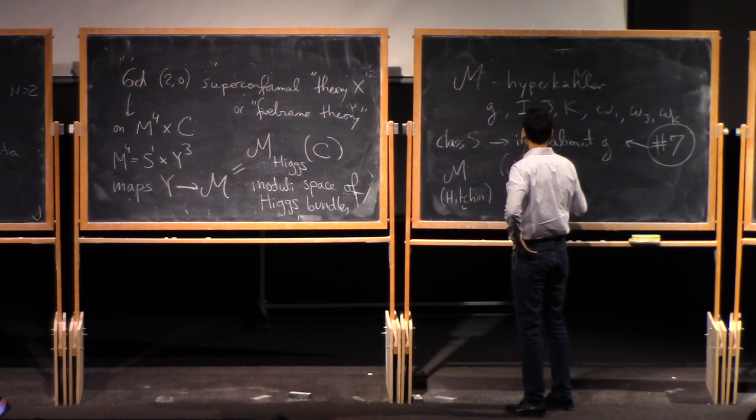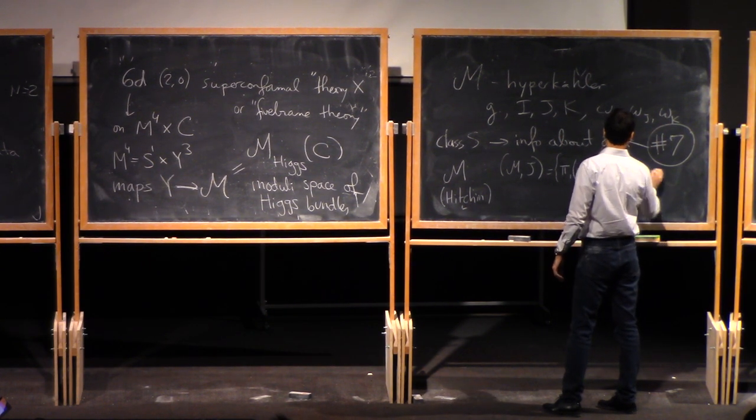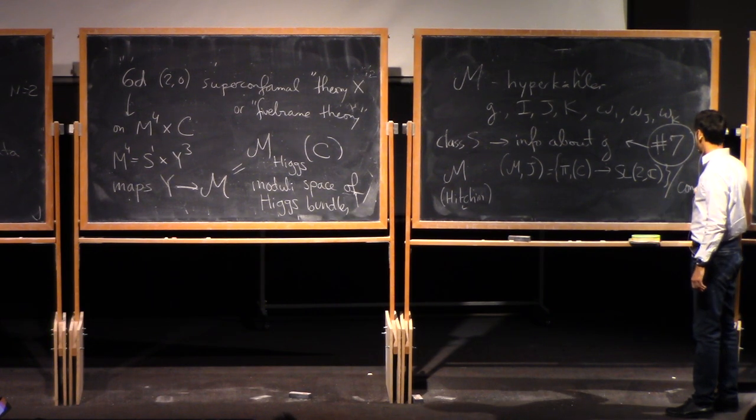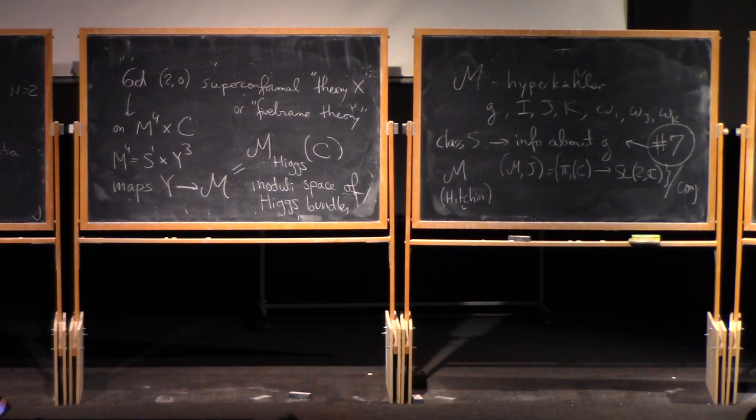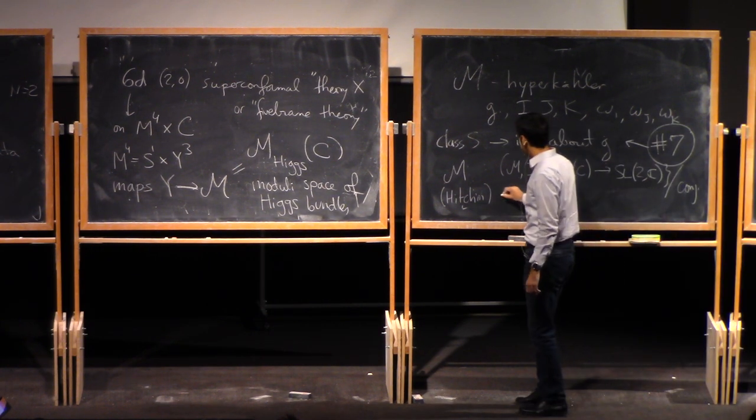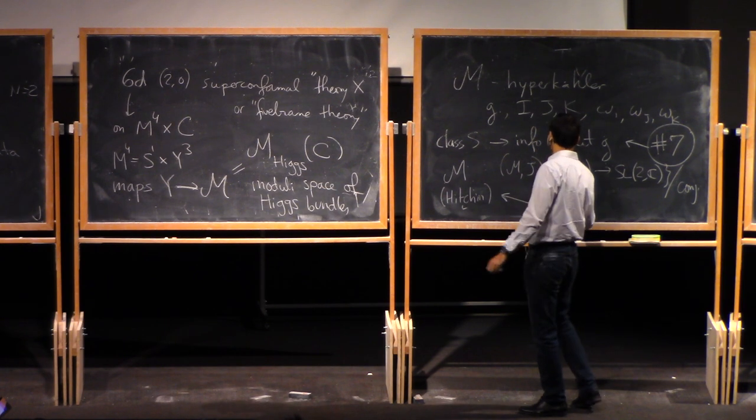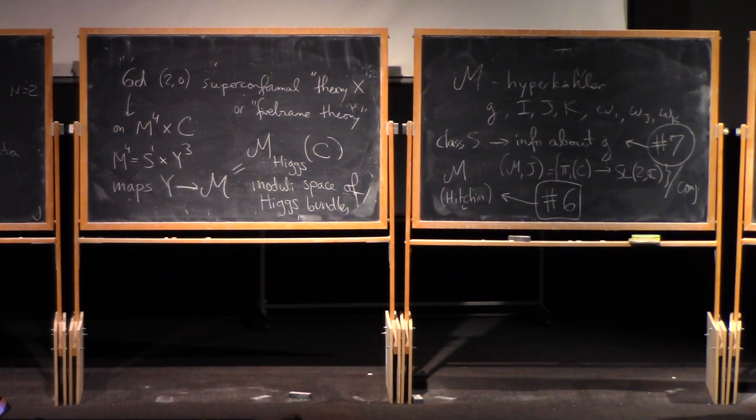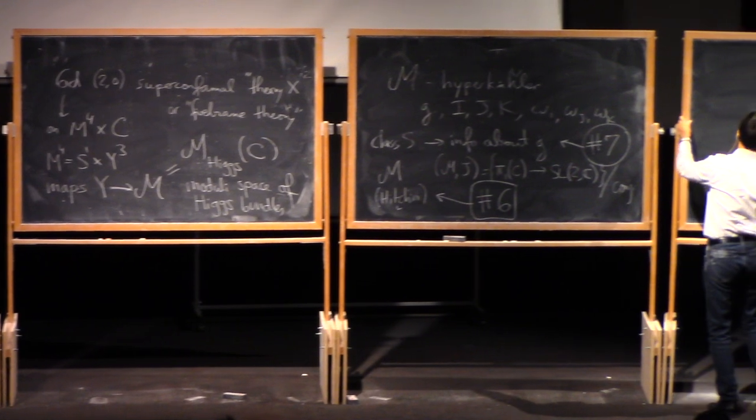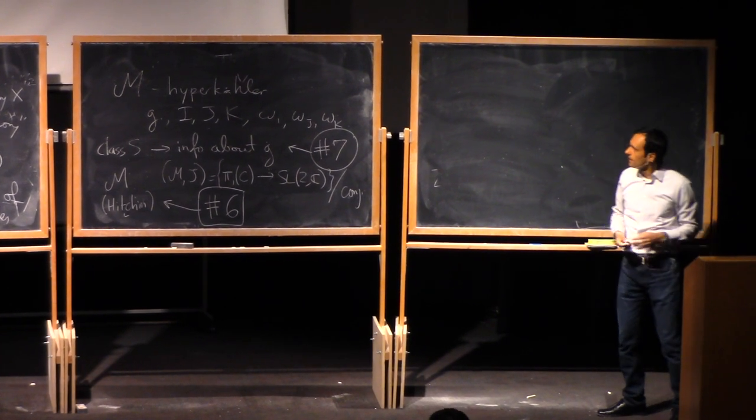Now, the space M appeared in mathematics a long time ago by Hitchin. So Hitchin is the one who, it's also called the Hitchin moduli space. Maybe I should say one thing. So with the complex structure J, this is not something complicated, it's just the space of, well, it is complicated, but it's the space of representations to SL2C from the fundamental group mod conjugation. So it's the character variety of the Riemann surface. But okay, from this description you cannot see the metric and the other, and the hyper-Kahler structure. So this space will be, so some of its mathematical properties will be studied in lecture series number six by Laura Schaposnik. Great.